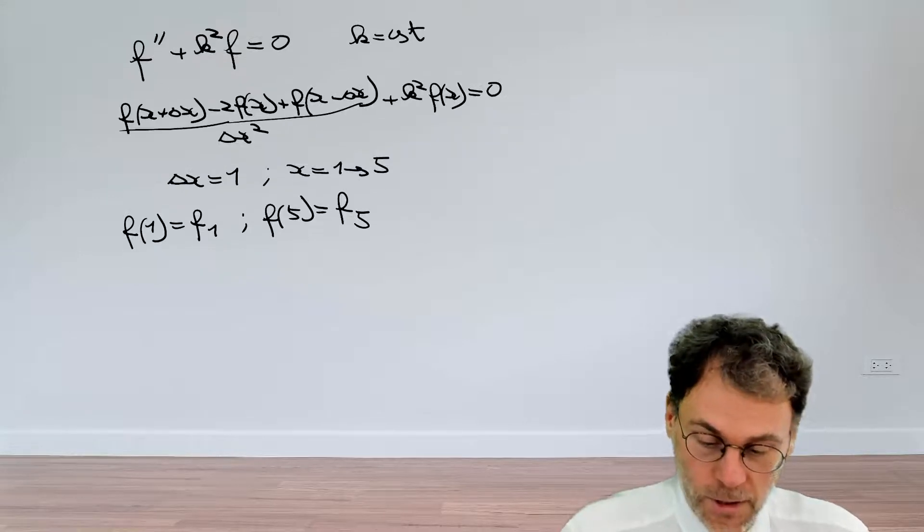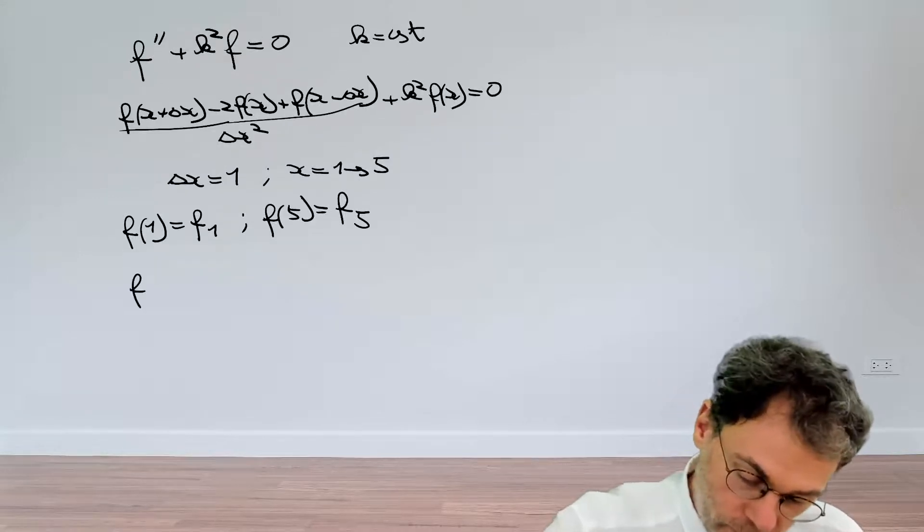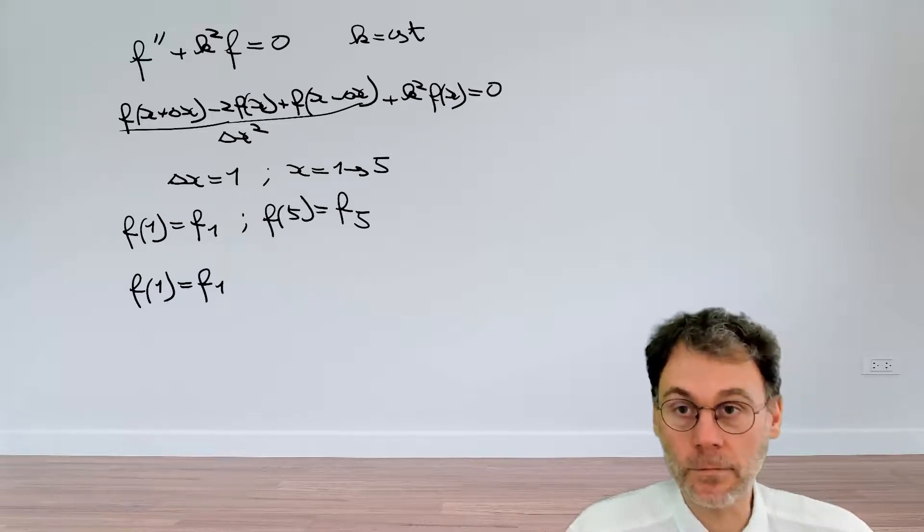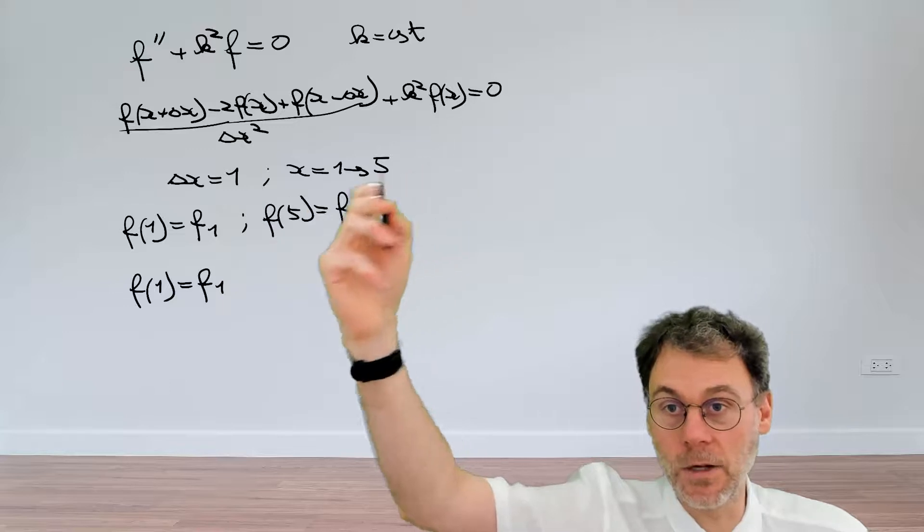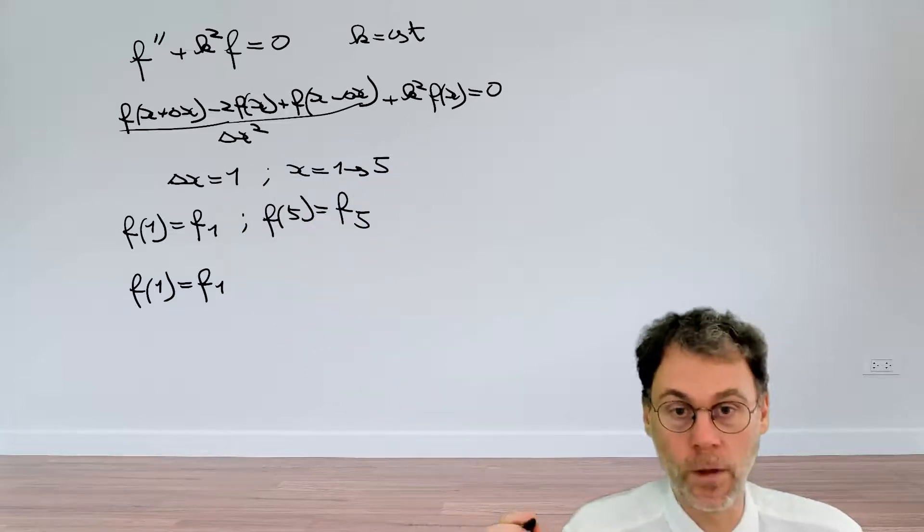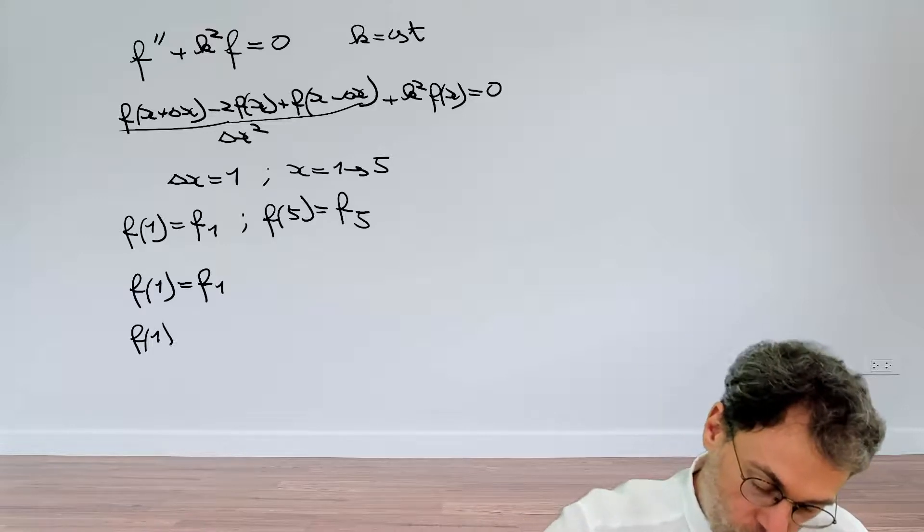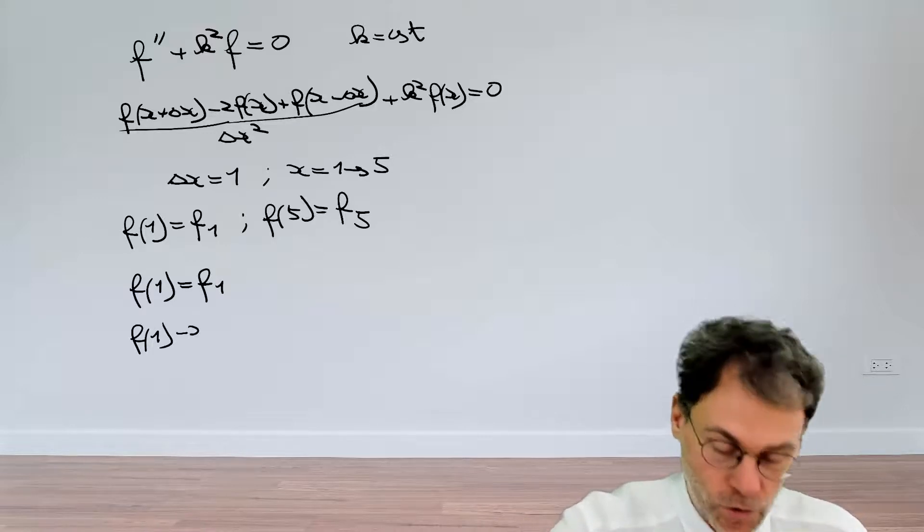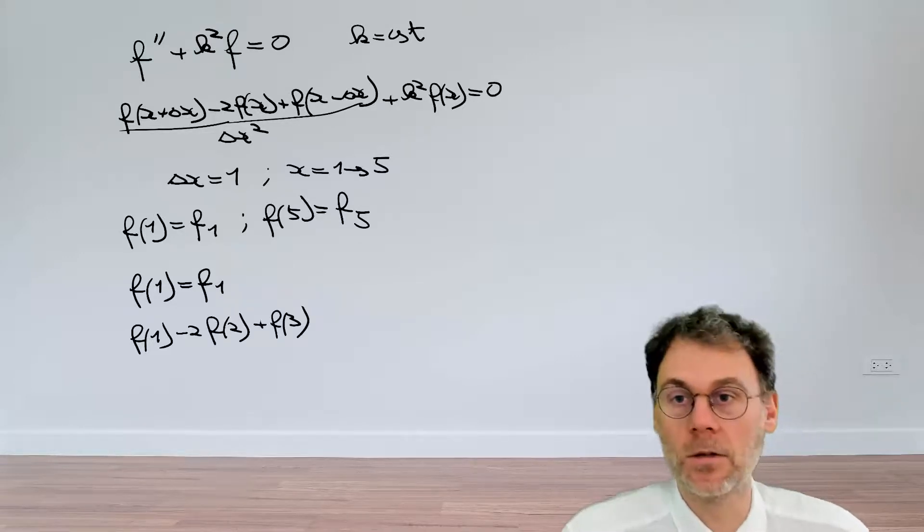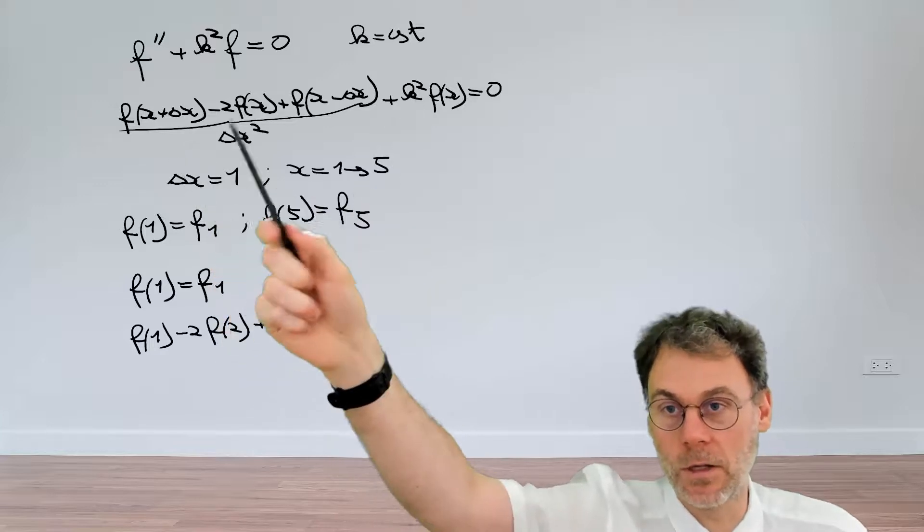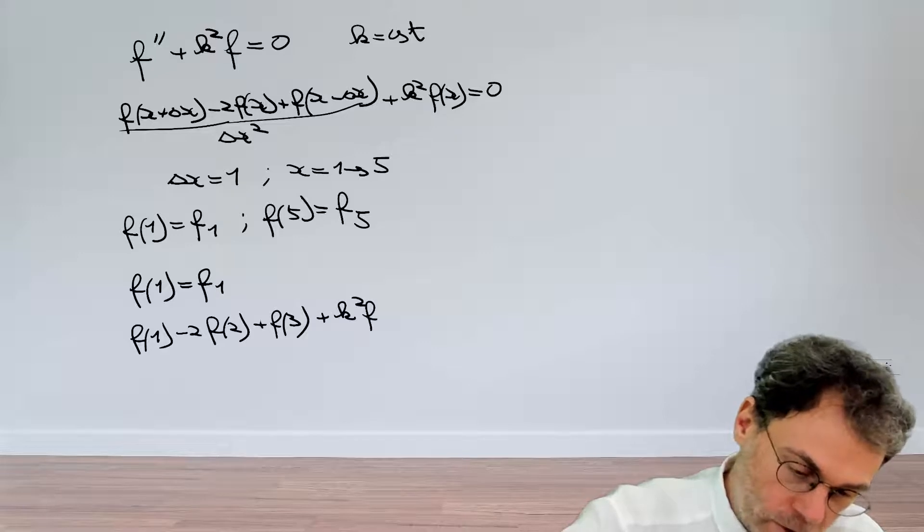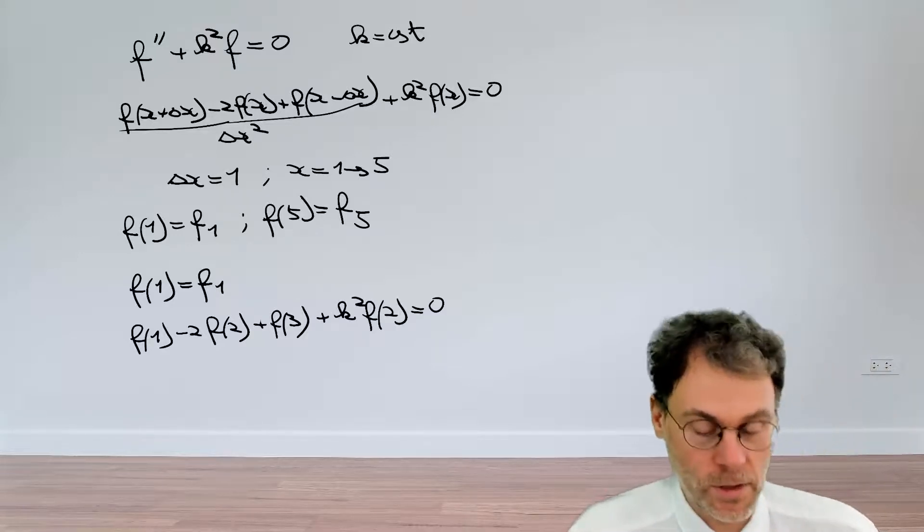Okay, first equation is a piece of cake. We already have that. We have at point 1, f1 is equal to f1. And now let's take that equation and evaluate that at the point x equal to 2. So then we have f of 1 minus 2f at 2 plus f3. This is basically this here where we have x equal to 2 and then plus k squared f2 equal to 0.